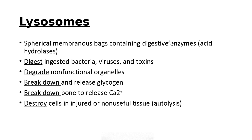Lysosomes — when the cell takes something in by endocytosis, it has to do something with it. The cell takes that little vesicle of germs and moves it over to a lysosome and fuses with it. Enzymes and acid hydrolases inside these lysosomes digest bacteria, viruses, toxins, fungi, or anything that needs to be digested. They also break down old organelles, glycogen when you need energy from it. Glycogen is the equivalent of starch in a plant. They can also break down bone to release calcium.